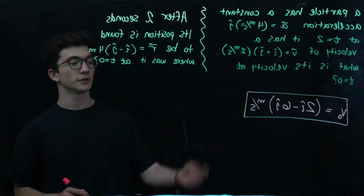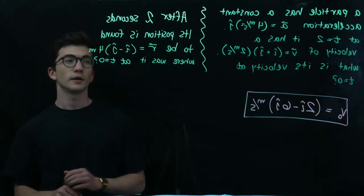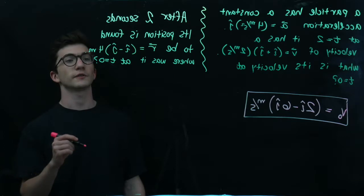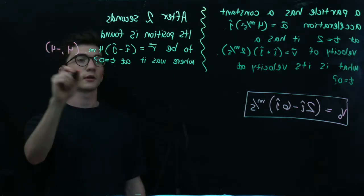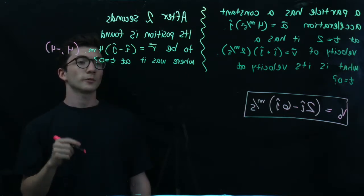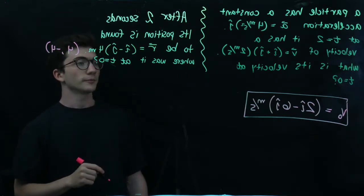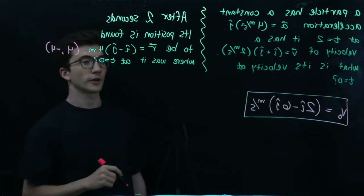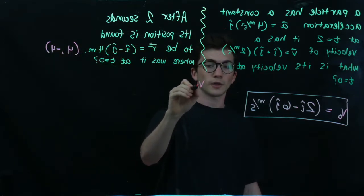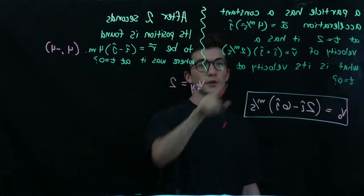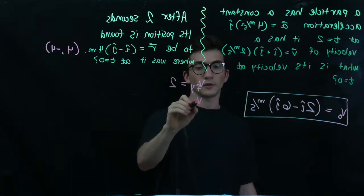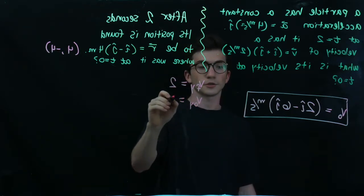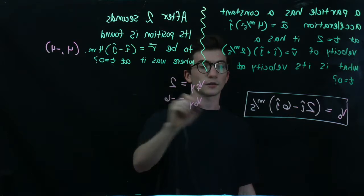In the last problem we found the initial velocity of the particle. Now we're told after 2 seconds its position is found to be 4, negative 4, and we're asked to find what its position was at t equals 0. Let's start by writing down what we know. The final velocity in the y direction is 2 — from the previous problem — and the initial velocity in the y direction is negative 6.